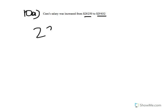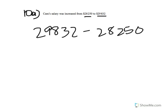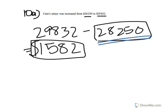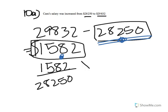Question 10 says Cara's salary was increased from $28,250 to $29,832. Work out the percentage increase. First, find the increase: $29,832 minus $28,250 equals $1,582. Then express this as a percentage of the original salary: 1582 divided by 28250 times 100 gives 5.6%.